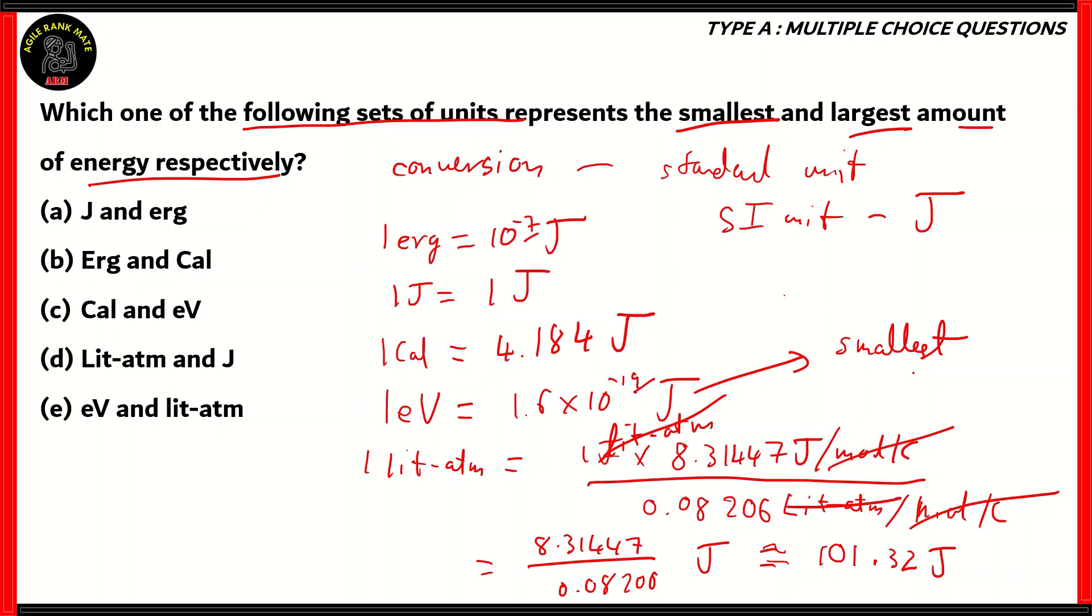What about the larger units of energy? 1 calorie is 4.184 joules, while 1 liter atom is 101.32 joules. Therefore, this is our largest unit of energy among the following. The option which contains electron volt as the smallest and liter atom as the largest units of energy respectively would be option E. This would be the correct option.